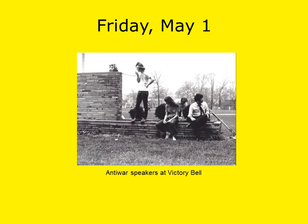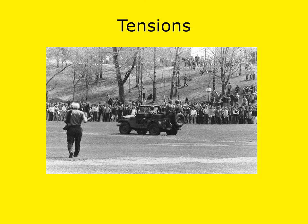A group of students ignited a bonfire, and then the gathering grew into a mob of several hundred people. Unknown persons in the crowd tossed bottles at police and broke storefront windows. In response to the disturbances, the mayor of the city declared a state of emergency, and local police used tear gas canisters and batons to force the students out of the downtown district and back onto campus. The mayor of the city of Kent ordered a dusk-to-dawn curfew, and students were restricted to campus.